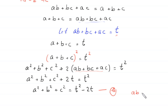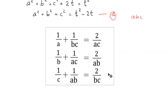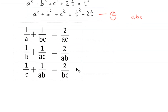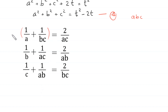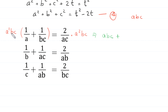Now we find the value of abc. We copy the three original equations. First, we multiply both sides of equation one by a²bc. This gives a²bc times 1/a equals abc, plus a²bc times 1/(bc) equals a², is equal to 2/(ac) times a²bc equals 2ab.